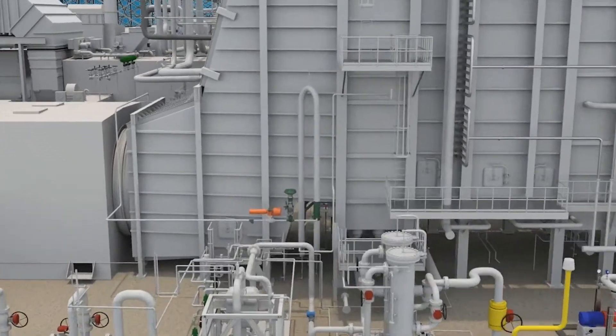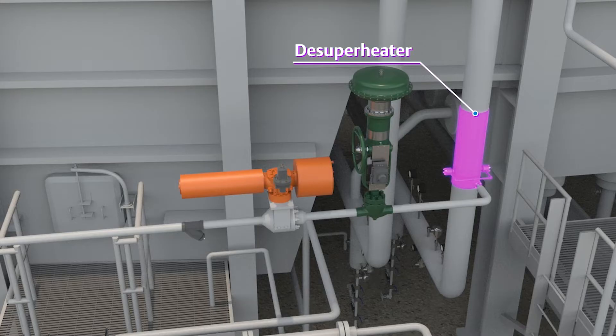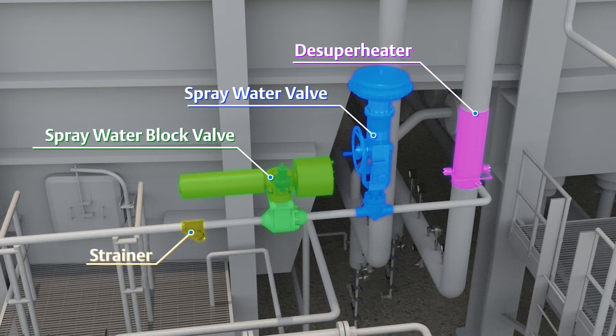Steam temperature is controlled using a temperating system. It consists of a desuperheater, spray water valve, spray water block valve, and a strainer.